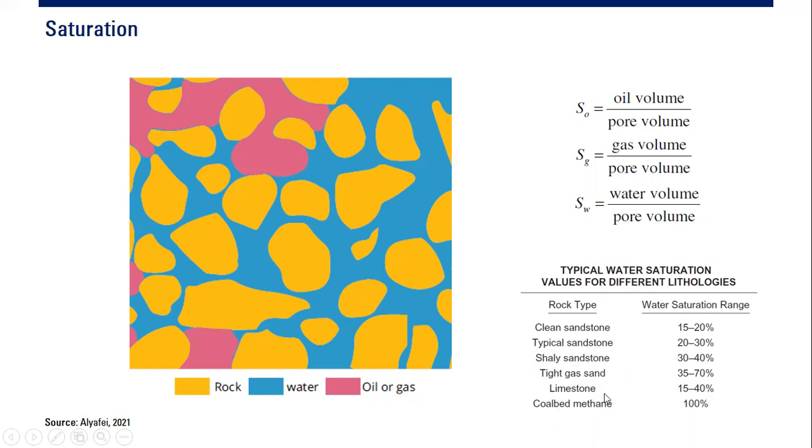Coal bed methane, 100 percent - almost 100 percent water saturation, and the rest are the coal gas or coal bed gas. And limestone, 15 to 40 percent, quite heterogeneous. So you see, these are the typical water saturation values for each different lithology.